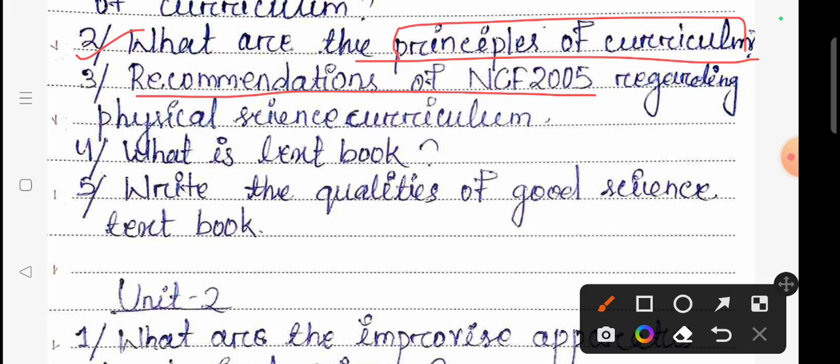The recommendations of NCF 2005 regarding the physical science curriculum. This covers the curriculum, the knowledge imparting, the outer knowledge, the guiding principles, and rote learning.